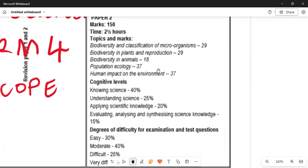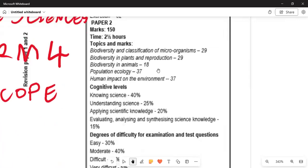Moving on, we have Paper 2, which is the same marks out of 150, two and a half hour paper. The topics and marks allocated: biodiversity and classification of microorganisms is 29 marks, biodiversity in plants and reproduction is 29 marks, biodiversity in animals 18, population ecology 37, human impact on the environment 37. That is the end of Paper 2.